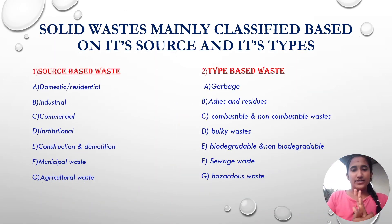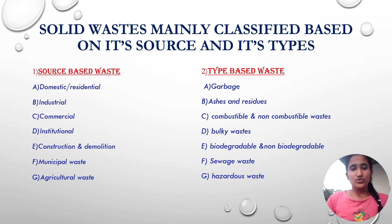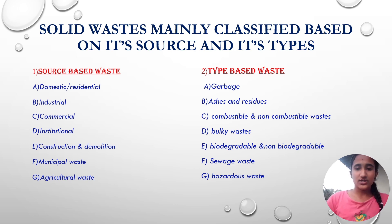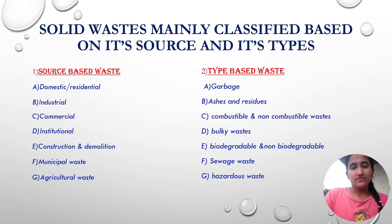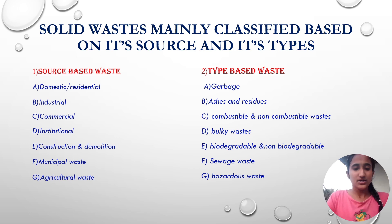Solid waste is classified based on its source and its type. The source-based waste types are as follows: domestic, industrial, commercial, institutional, construction and demolition, municipal waste, and lastly agricultural waste.